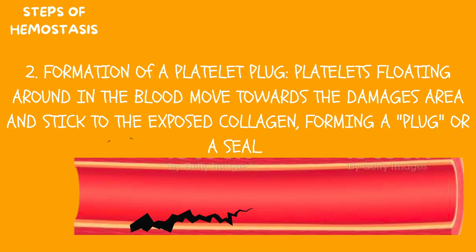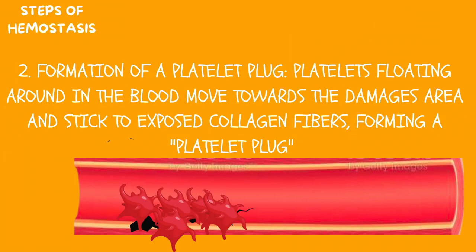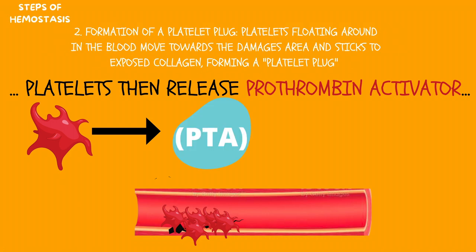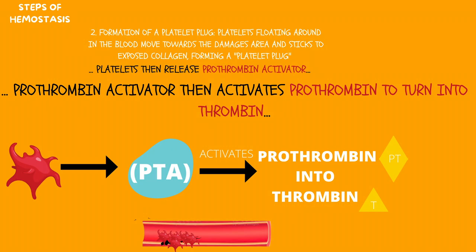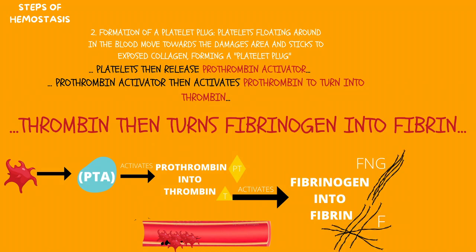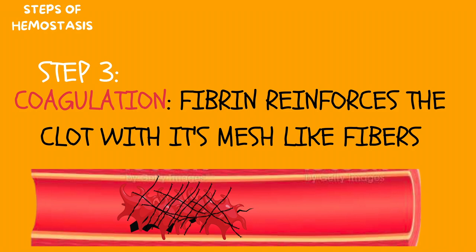The second step is formation of a platelet plug, which includes a few smaller steps. First, platelets floating around in the blood will stop at the damaged site and stick to the exposed collagen. The platelets will eventually form a plug. Next, these platelets will release the prothrombin activator. The prothrombin activator, along with the help of vitamin K, will then turn prothrombin into thrombin. Thrombin will then convert fibrinogen into fibrin. Fibrinogen is soluble in blood and fibrin is insoluble in blood. In step 3, fibrin being insoluble will be able to reinforce the clot with its mesh-like fibers. And these are the three steps of hemostasis.